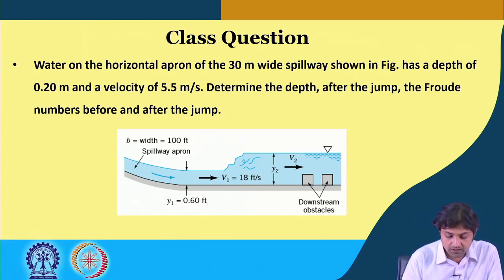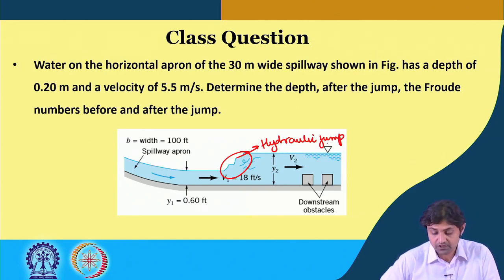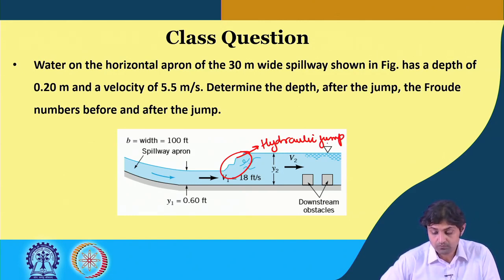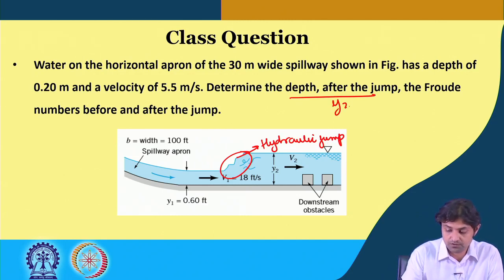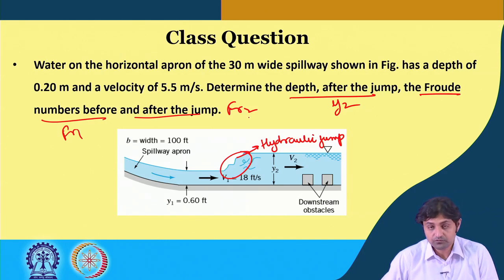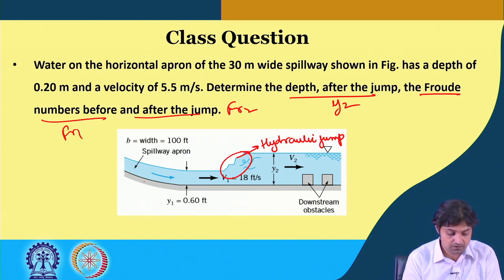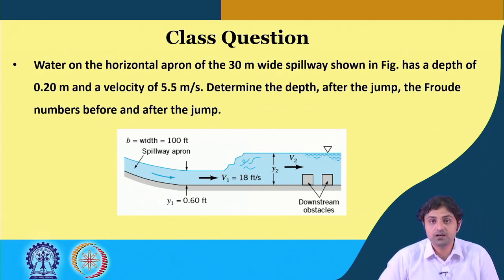If you see in this figure, the water is coming and it is undergoing a hydraulic jump. We have to calculate y2 — the depth after the jump — as well as Fr1 and Fr2. We know the conditions at section 1, so it is pretty simple to calculate Froude number 1. We will go step by step the way you should be solving this.